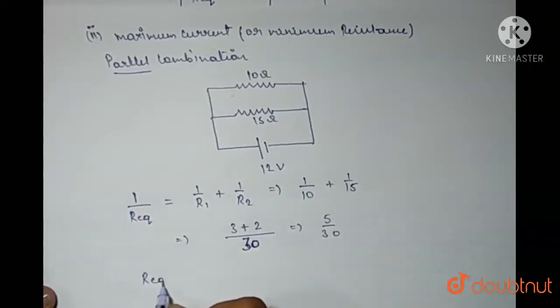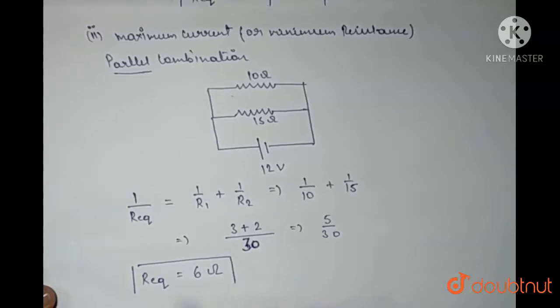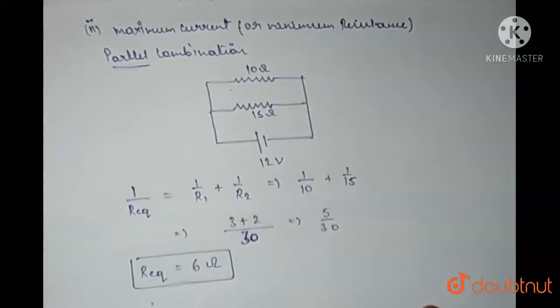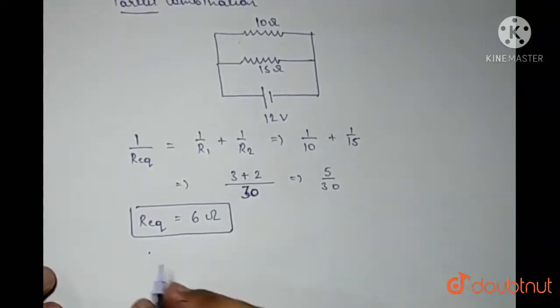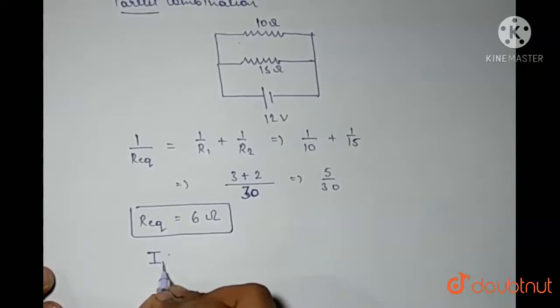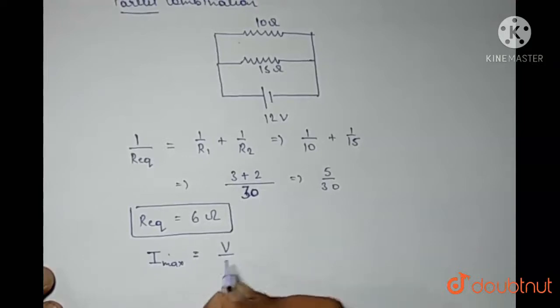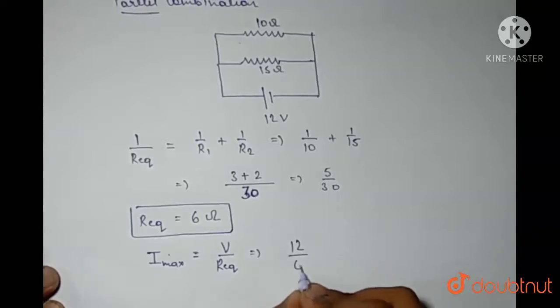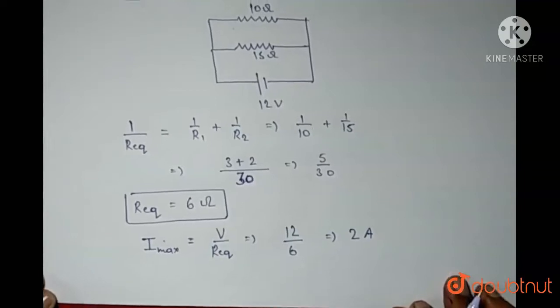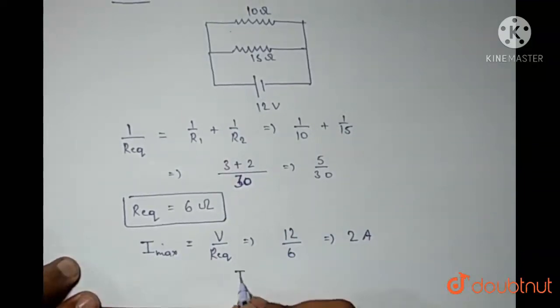And what would be the current? I maximum equals to V upon R equivalent in parallel. So this is 12 upon 6 which is equals to 2 amps. So I maximum would be 2 amps.